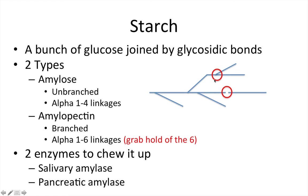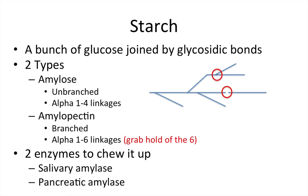This circle up here shows amylopectin — a branched one going up. The way I remember this: I think of a six above my head, grabbing onto that little circle part of the six and pulling myself up. So amylopectin is reaching up and grabbing that six, becoming branched. There are two enzymes that chew up starch called amylase — salivary amylase and pancreatic amylase — so the salivary glands and the pancreas both produce amylase.